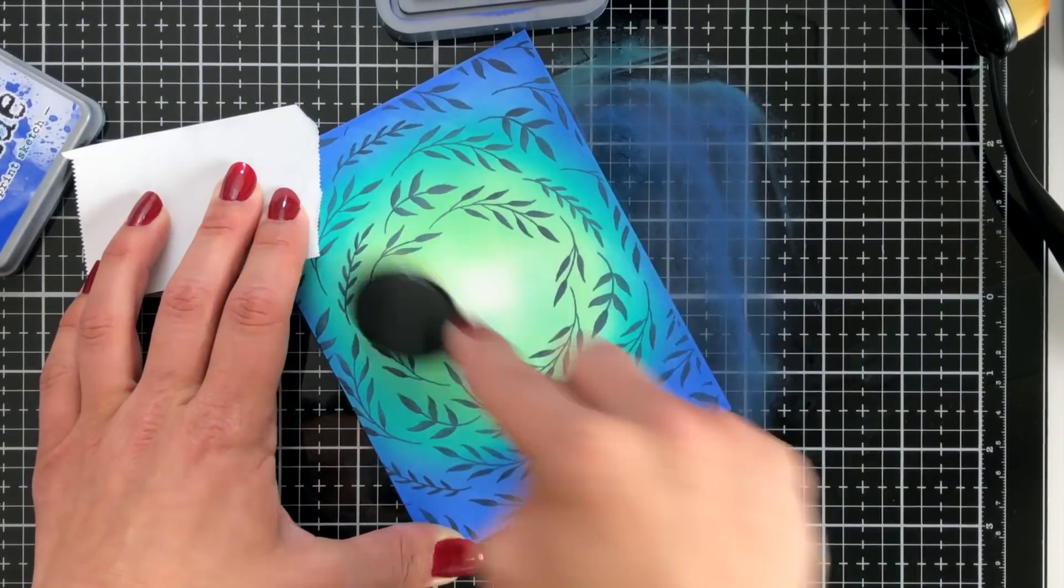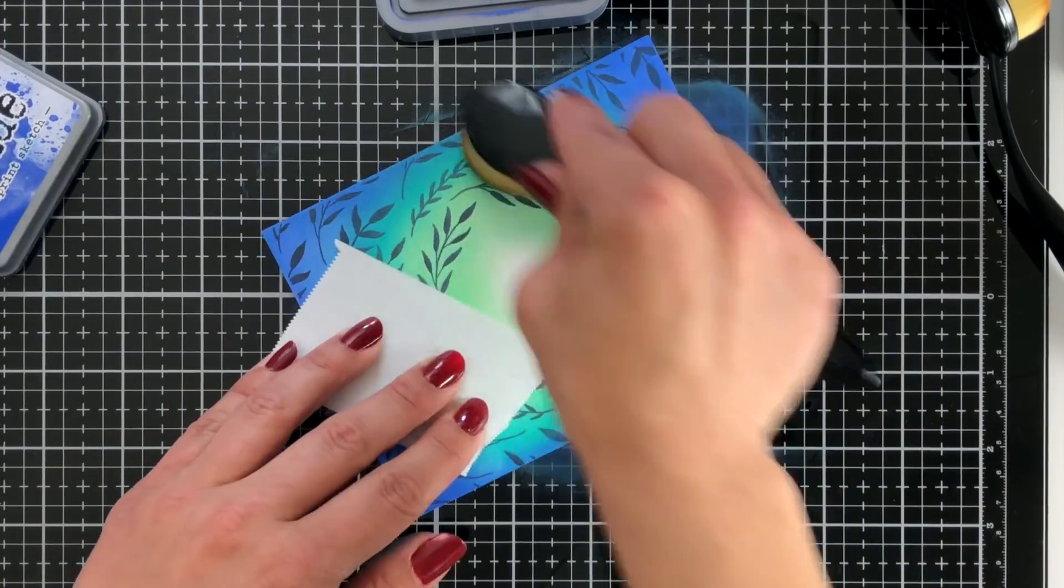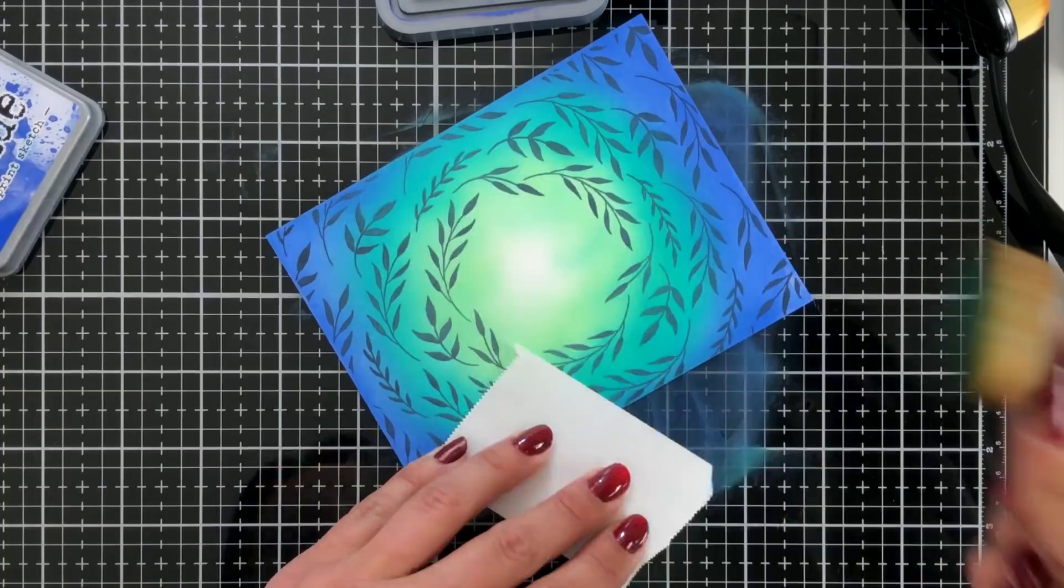Now I will come back in and add some more of that cracked pistachio and the peacock feathers just to really brighten that up. Really bring those colors out.